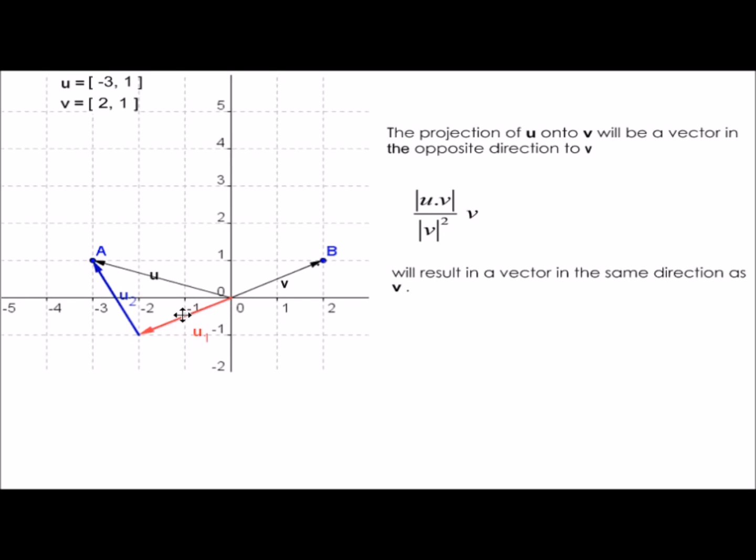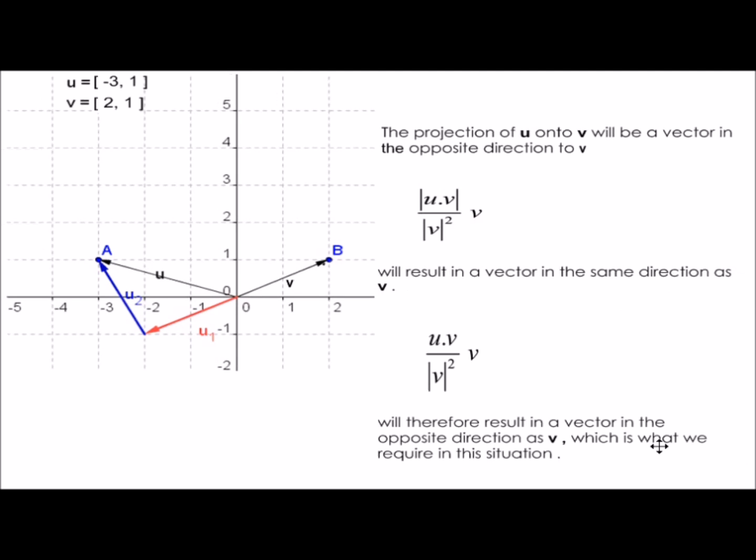Now in red here we have the projection vector, which you can see is in the opposite direction to v. Our formula with the modulus around the dot product will result in a positive number times v, which will be in the same direction as v, which is not what we want. So without the modulus sign around the dot product, we'll end up with a vector in the opposite direction to v, which is the result we're after.